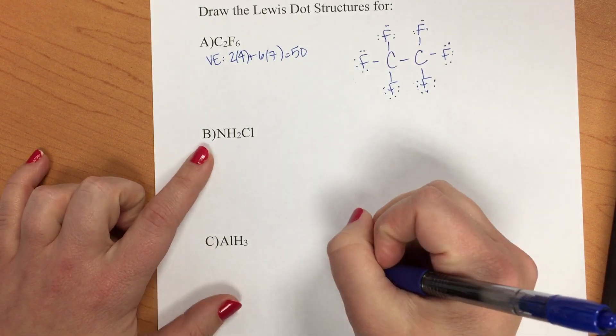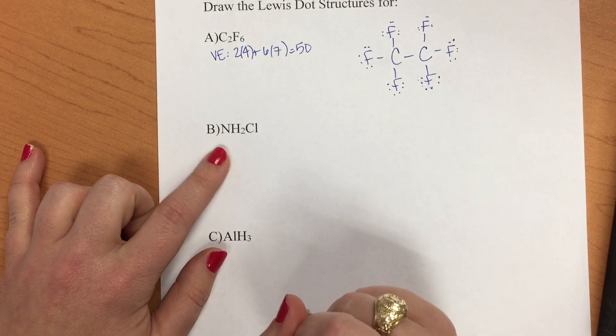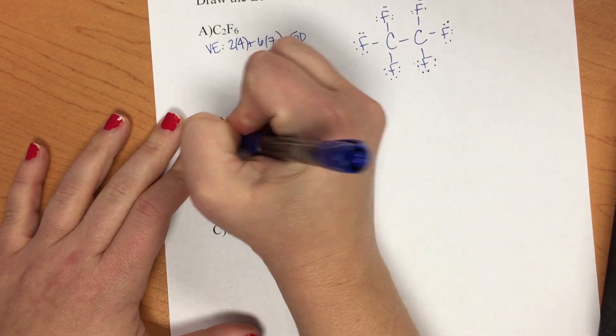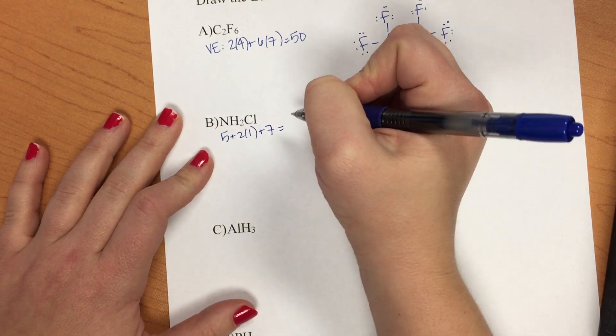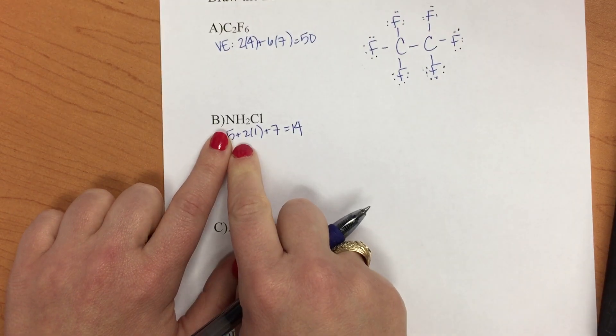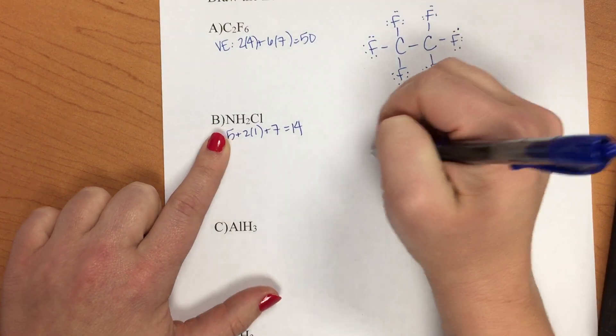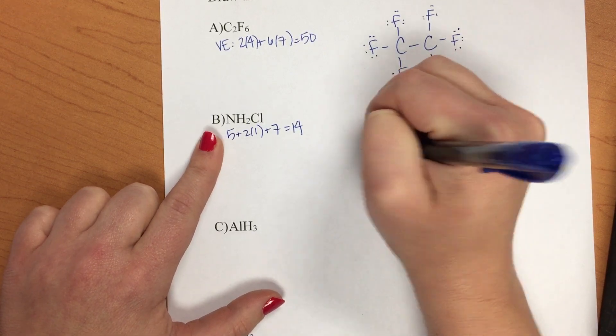Next we have ammonium chloride or NH2Cl. So let's calculate the valence electrons. 5 plus 2 times 1 plus 7 is going to equal 14. So nitrogen would be our central atom. Okay, so we have a nitrogen. We're going to connect a chlorine, a hydrogen, and a hydrogen.